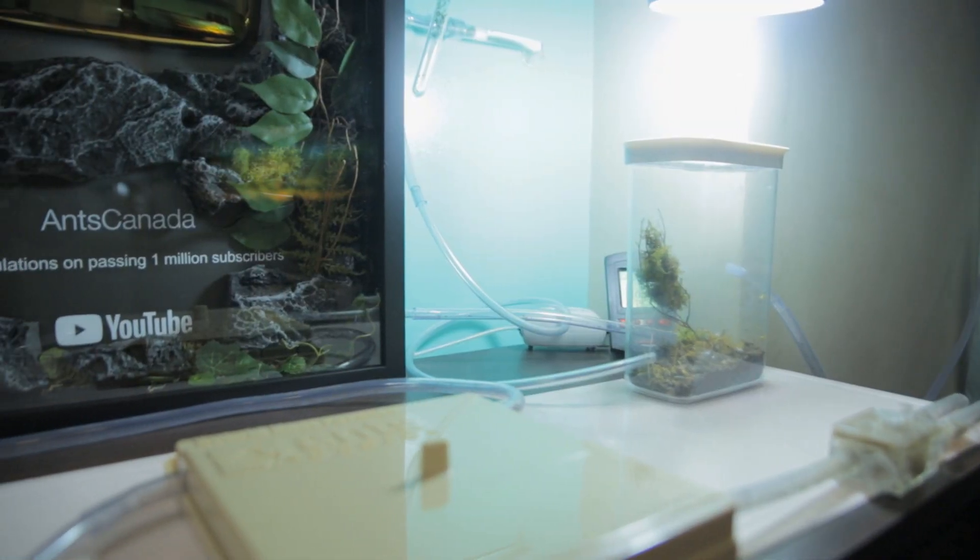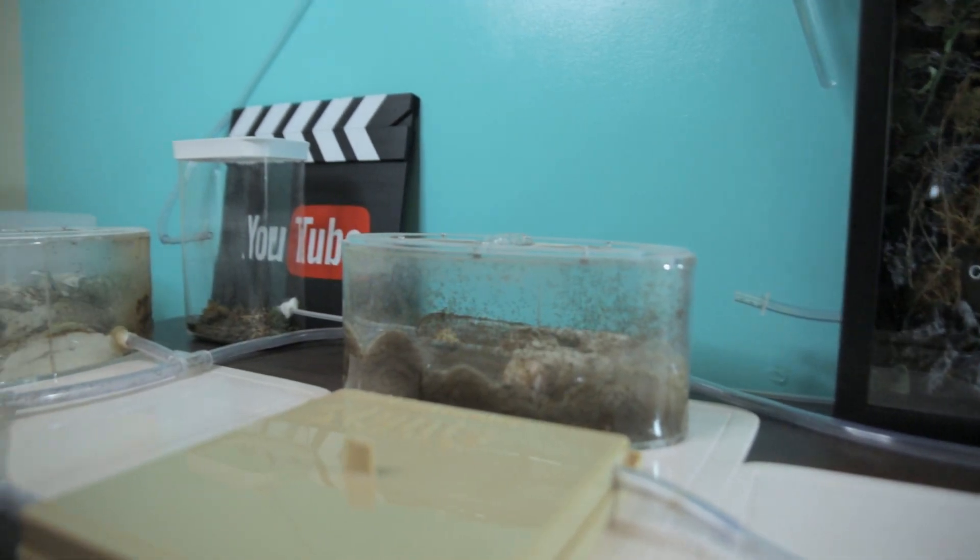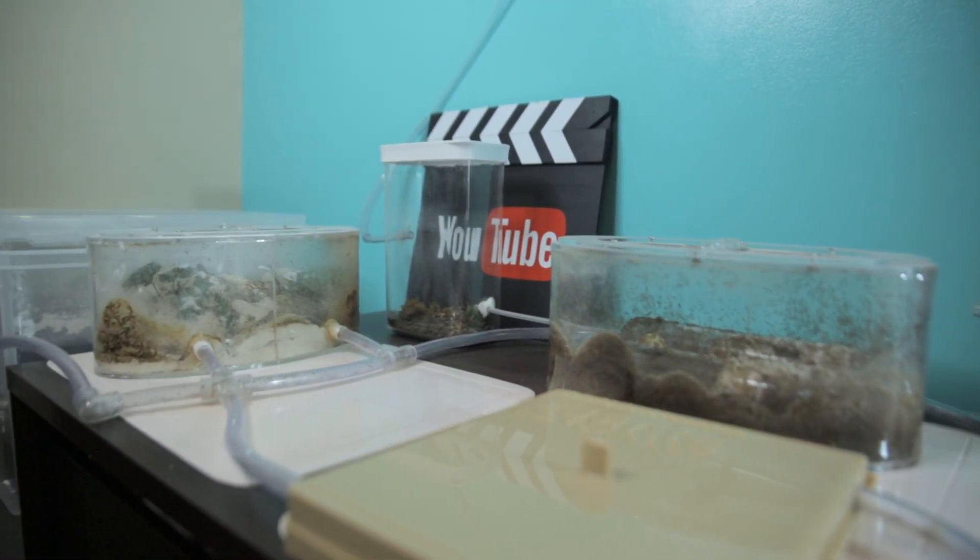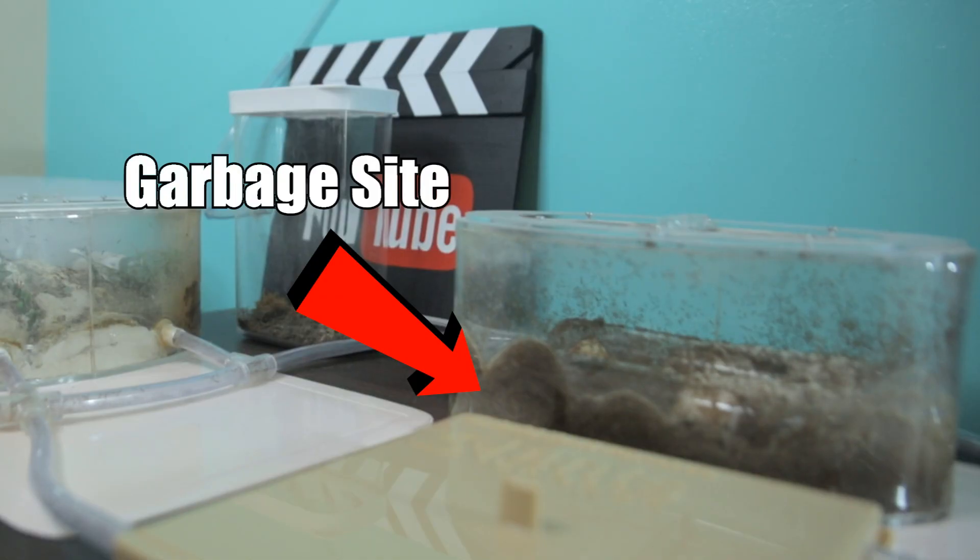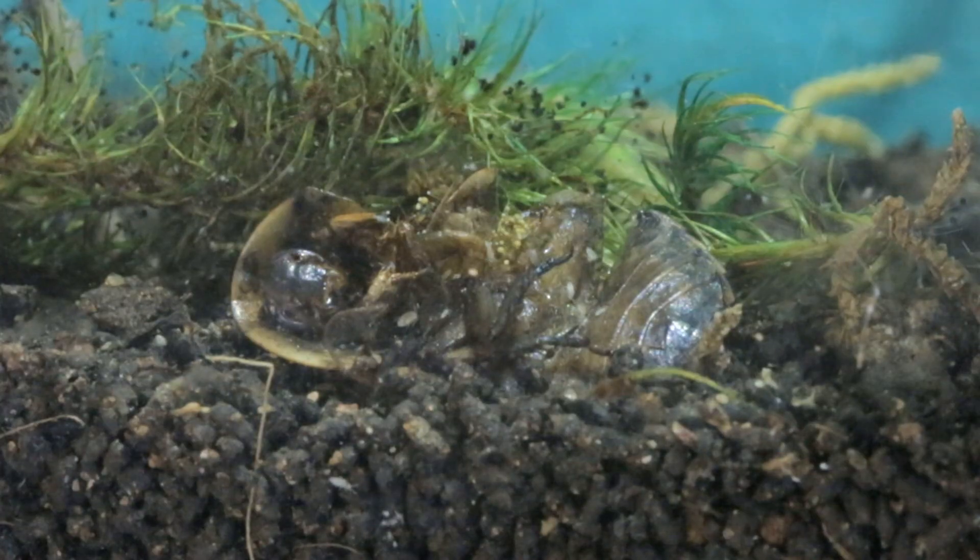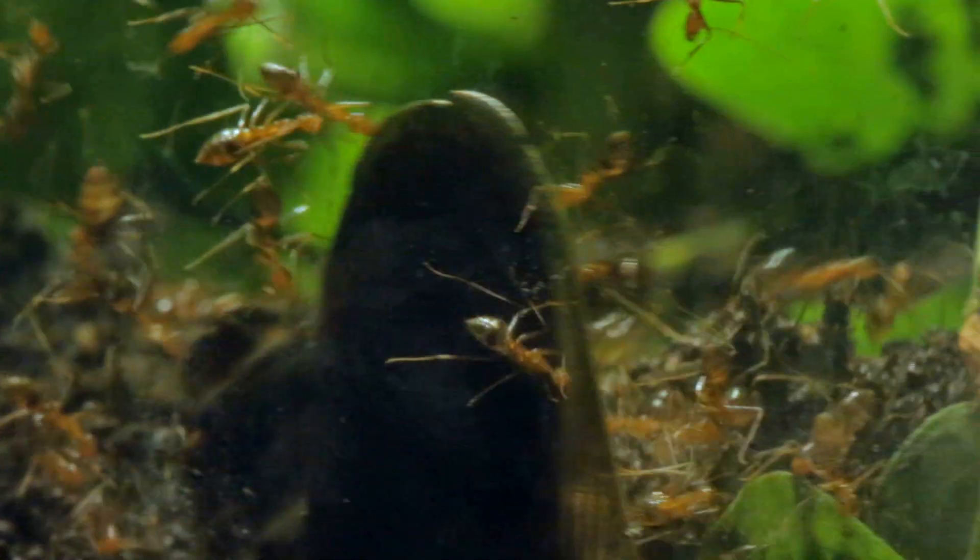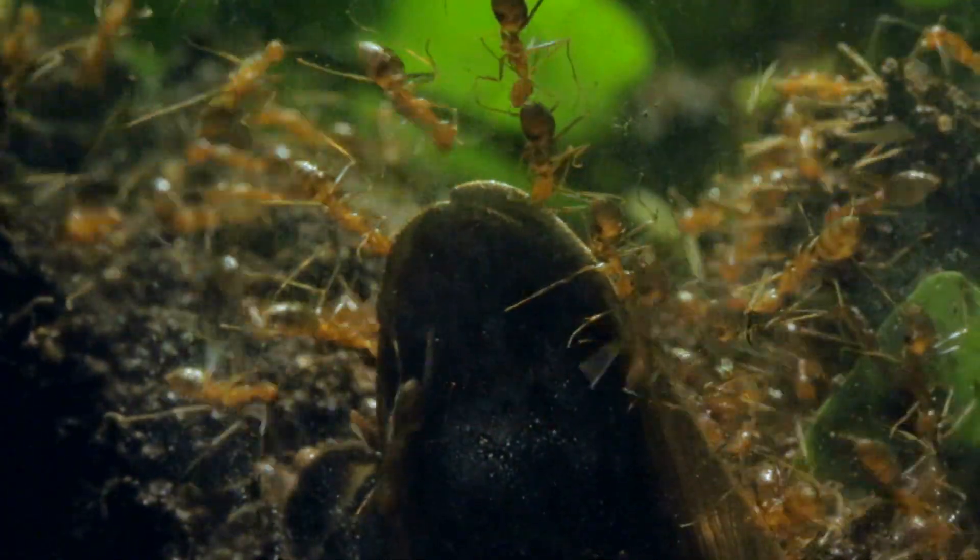You see, ants are super clean and sterile animals. They don't just leave their trash laying around to fester. Like humans, they establish a designated garbage site to which they carry their trash, and from there they leave it to natural critters like springtails and molds to further break down the garbage safely. Some ants have underground chambers which they make their garbage sites, and when these chambers are full, they simply block off the entrances to these garbage rooms with soil, and leave it to the springtails and molds to break them down.